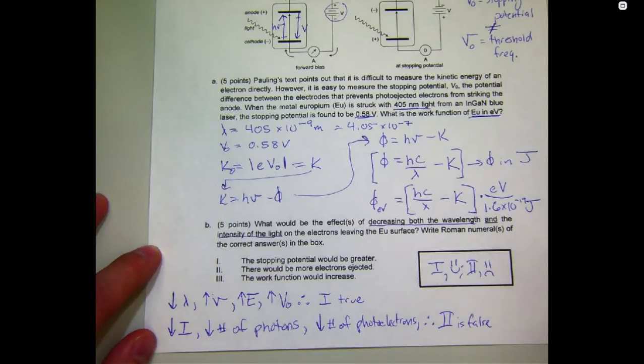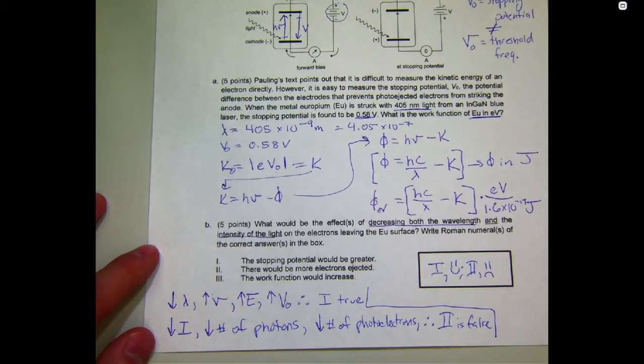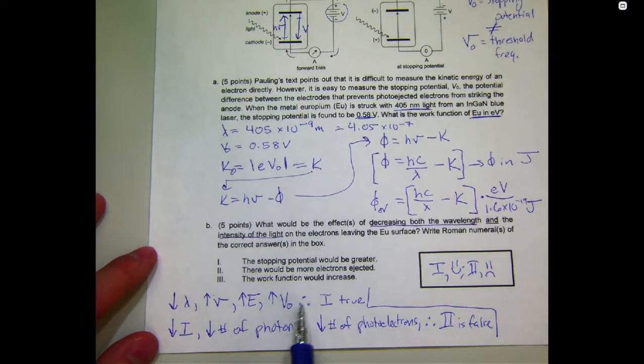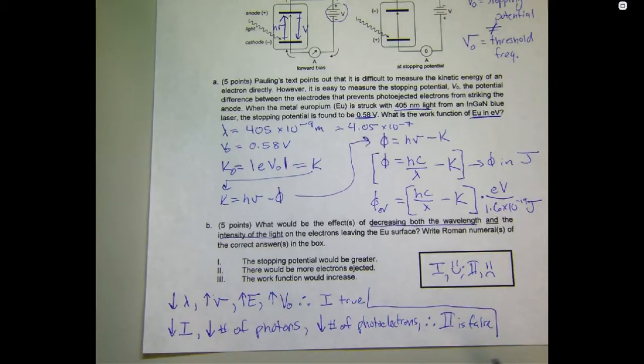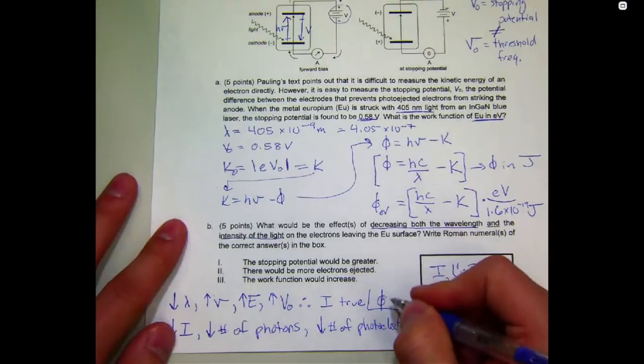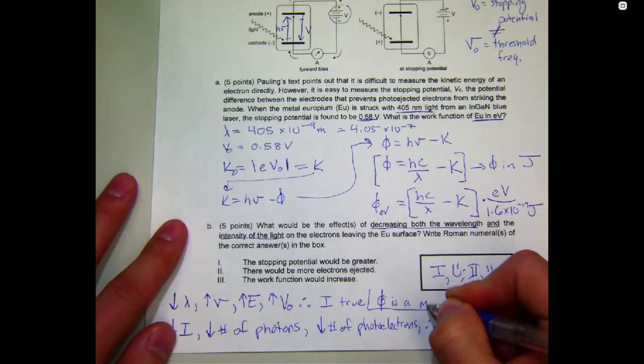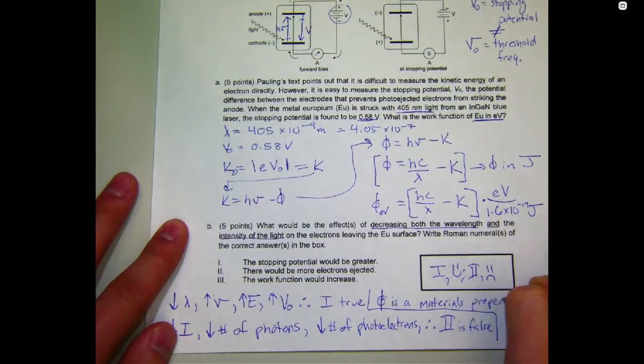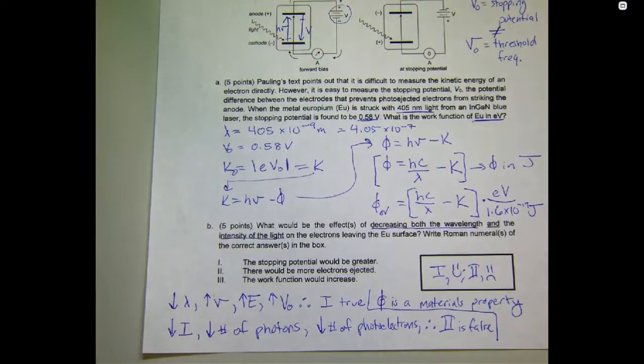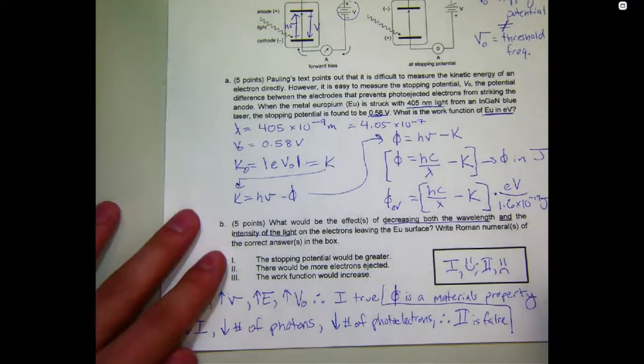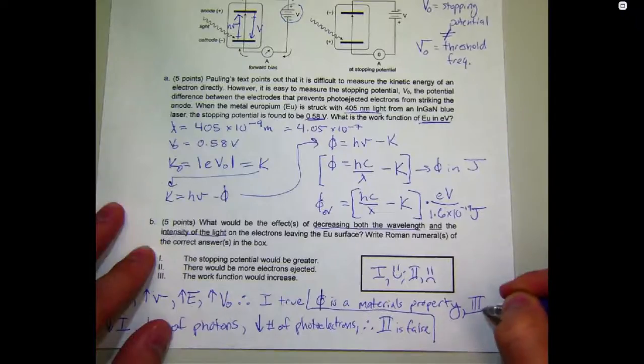Finally, number three, the work function would increase. We didn't ever talk about this directly, but the work function is actually a material dependent property. So, all pieces of europium have the same phi value, the same work function. So, phi is a materials property. And once I've built my experimental setup, there's nothing that I can do to change phi. I could take apart my entire apparatus, replace the europium cathode with, say, an iron cathode, and then my phi would be different. But as long as I'm not changing the actual identity of my electrodes, then phi never changes. So, if phi is a materials property, three is false.